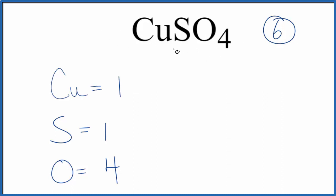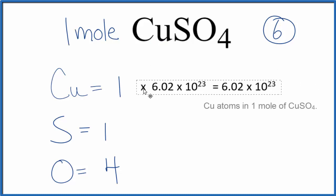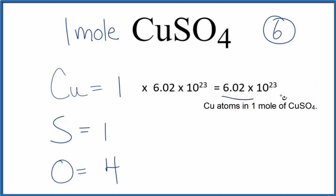Sometimes you're asked to find how many atoms are in one mole of CuSO4. In that case, if you want to figure out how many copper atoms are in one mole of CuSO4, you just multiply that 1 by Avogadro's number. That tells you how many copper atoms are in CuSO4.